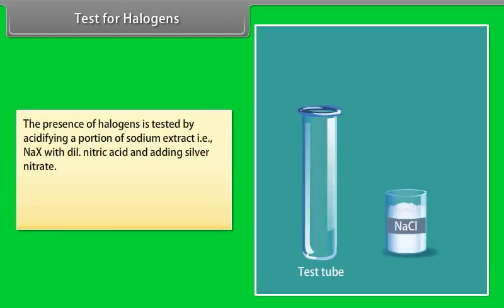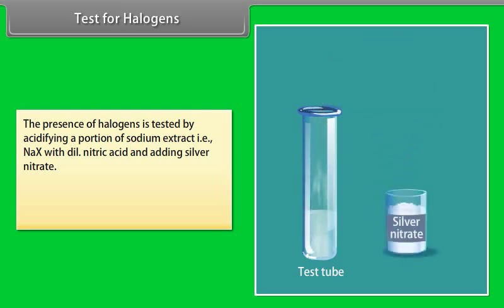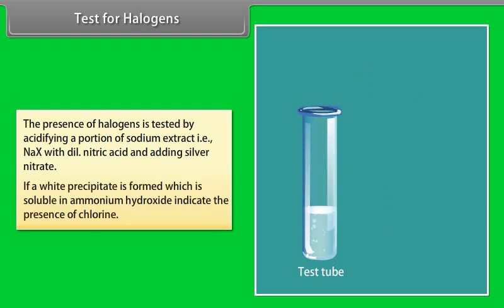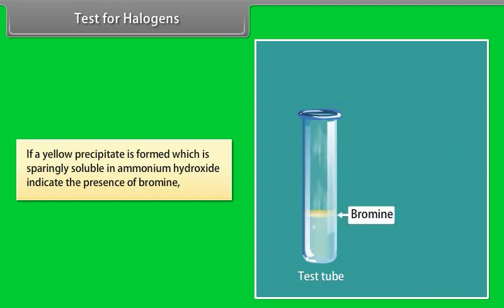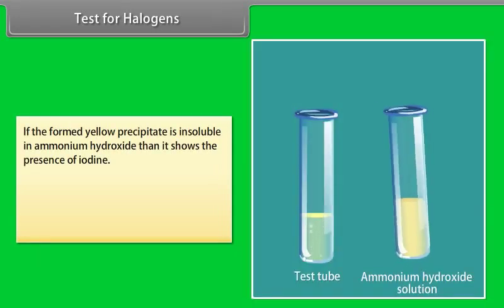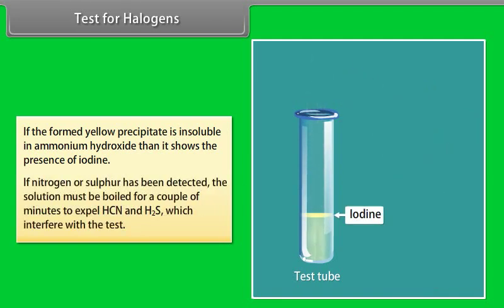Test for halogens: the presence of halogens is tested by acidifying a portion of the sodium extract (NaX) with dilute nitric acid and adding silver nitrate. A white precipitate soluble in ammonium hydroxide indicates chlorine. A yellow precipitate sparingly soluble in ammonium hydroxide indicates bromine. A yellow precipitate insoluble in ammonium hydroxide indicates iodine. If nitrogen or sulphur has been detected, the solution must be boiled for a couple of minutes to expel HCN and H₂S, which interfere with the test.